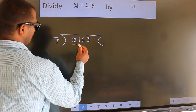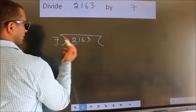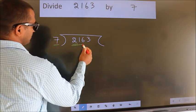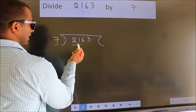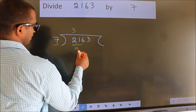here we have 2. Here 7. 2 is smaller than 7, so we should take 2 numbers: 21. When do we get 21? In the 7 table. 7 threes, 21.